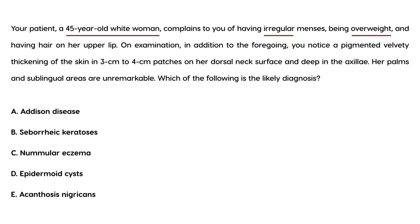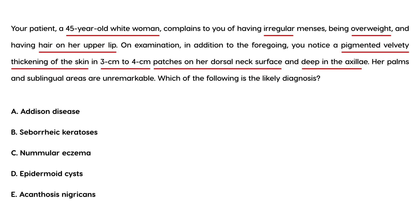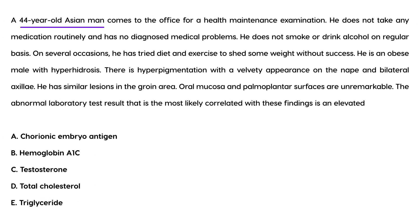Practice question: A 45-year-old white woman complains of irregular menses, being overweight, and hair on her upper lip. On exam, you notice a pigmented velvety thickening of the skin in three to four centimeter patches on her dorsal neck and deep in the axilla. The description — velvety, hyperpigmented, located on the back of the neck and axilla — is very characteristic. The most likely diagnosis is acanthosis nigricans.